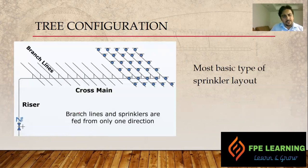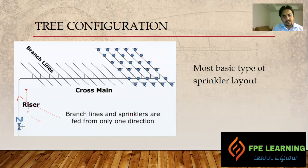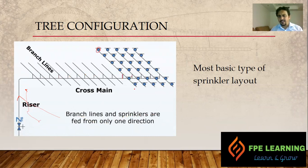The first one is the tree configuration. In the tree configuration, we have water supply only from the branch lines, and the sprinklers are fed from only one direction. The water is going from this side and going to the different branches from this connection. It is the most basic type of a sprinkler configuration you can find at a site.